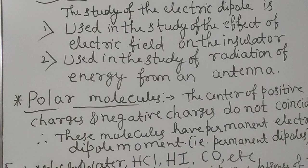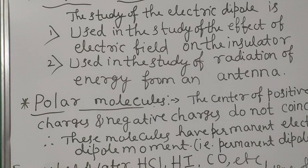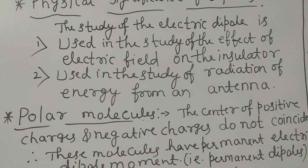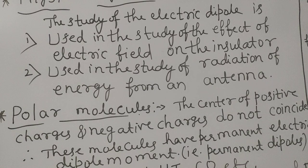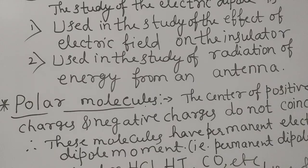The second use is radiation of energy from an antenna. Antennas receive electromagnetic waves. How are electromagnetic waves produced? Charges in motion — accelerating charges produce electromagnetic waves. So electric dipole is used to study the radiation of energy from an antenna.